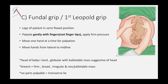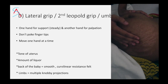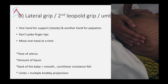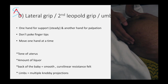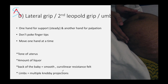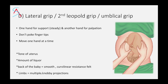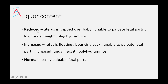If it is a breech, describe it as a firm, broad, irregular, and non-ballotable mass suggestive of breech. In transverse lie, you won't be able to feel any palpable fetal part in the fundal grip. In the second grip, support with one hand and palpate with the other, moving one hand at a time. Look for the tone of the uterus — whether contracted or relaxed. If you feel smooth curvilinear resistance, it suggests the back of the fetus; if it is multiple knobby projections, it suggests the limbs. Liquor content is reduced when the uterus is gripped over the baby and fetal parts can't be palpated — mostly due to oligohydramnios. It is increased when the fetus is floating and bouncing back, fetal parts can't be palpated properly, and fundal height is increased — mostly due to polyhydramnios. Liquor content is normal when fetal parts are easily palpable.